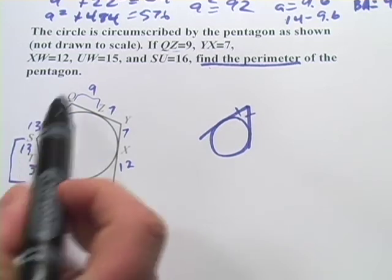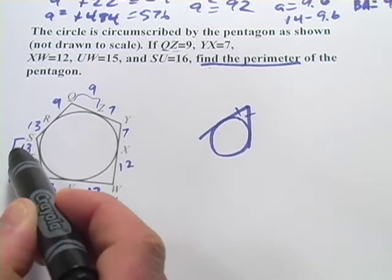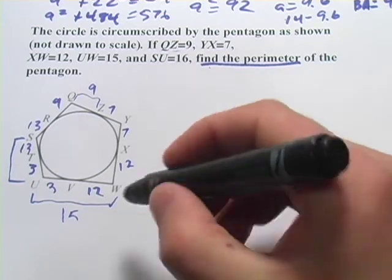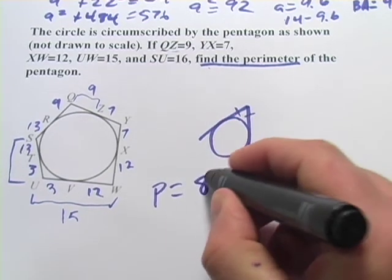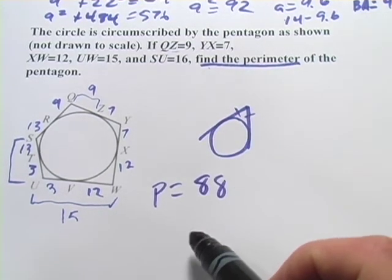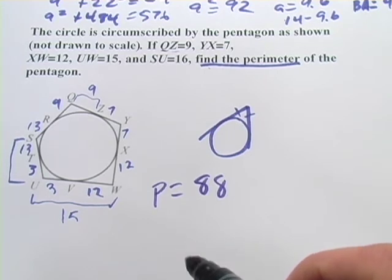So I've got 9 plus 9 plus 7 plus 7 plus 12 plus 12 plus 3 plus 3 plus 13 plus 13. And what I think that adds up to is 88. So you can check my math on that one but I think that's our perimeter.